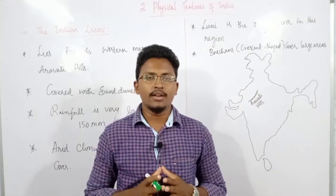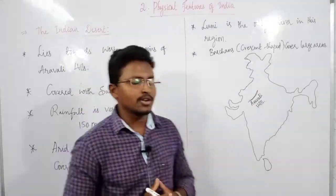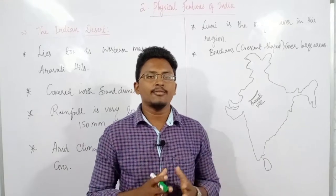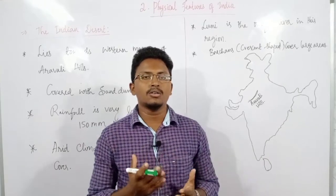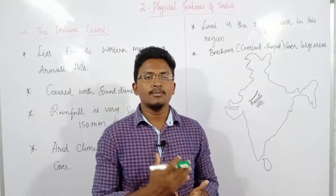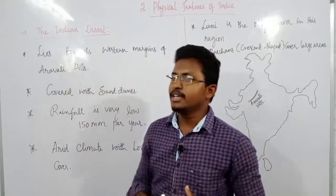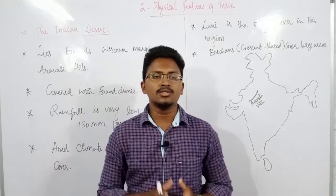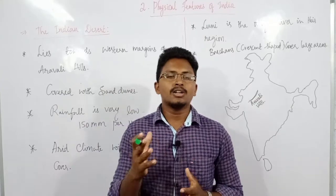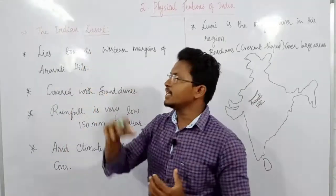Hello everyone, this is Ravinder Dundra and welcome to my channel. In this video lecture we will continue the next part of Class 9th Geography Chapter 2, that is Physical Features of India. In the previous lectures we discussed about two or three important physical features: northern plains, Himalayas, as well as peninsular plateau. Now we will continue the next topic, that is the Indian Desert, or we also call it the Great Indian Desert — its specialties, where it is located, and what are the climatic conditions.